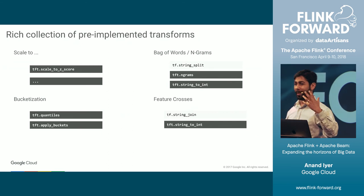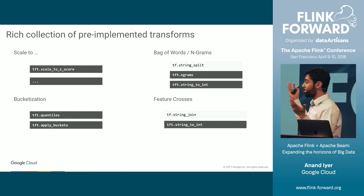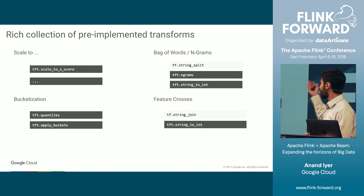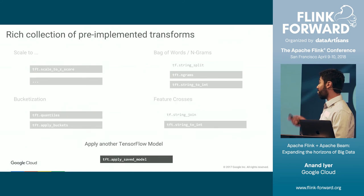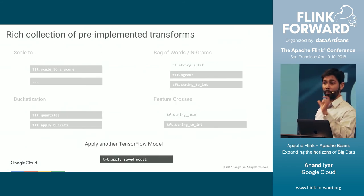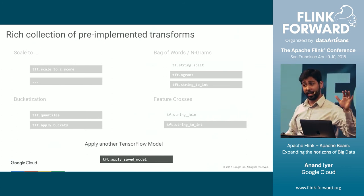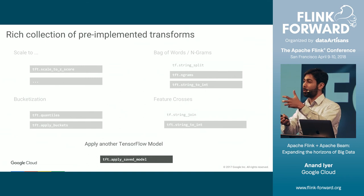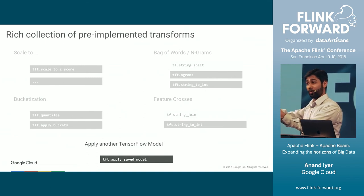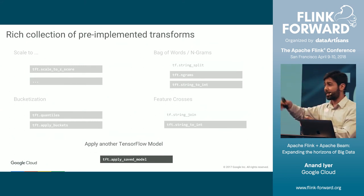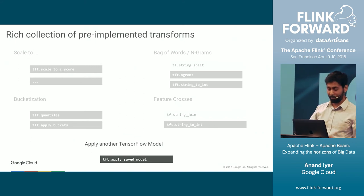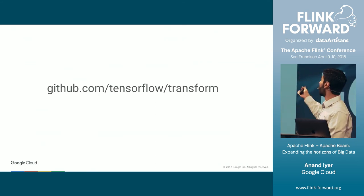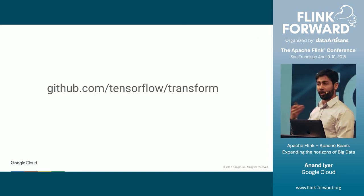Not only does TensorFlow Transform help you keep training and serving in sync, it also comes with a rich collection of pre-implemented feature transformations, so in many cases you don't have to implement something from scratch. And it helps you embed pre-trained models as part of your feature engineering — an increasingly popular paradigm where you take raw inputs, perform some feature engineering, run them through a model, take the model's outputs as features, and feed them to the final model. TensorFlow Transform makes that easy as well.